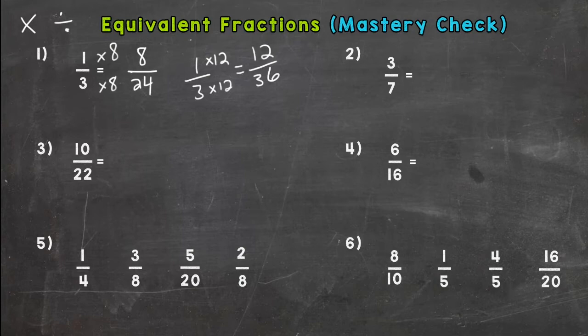Both are equivalent to one-third. You cannot use division for number one because you can't divide one and three by the same number. There's not a common factor there.